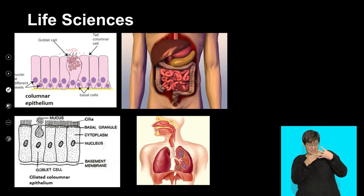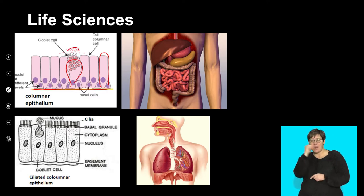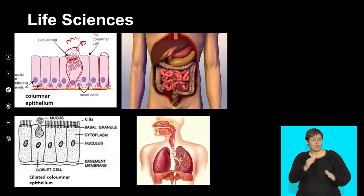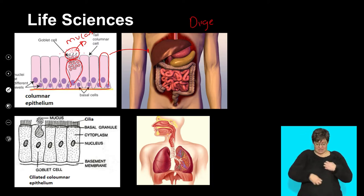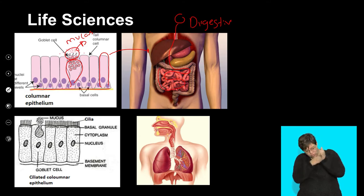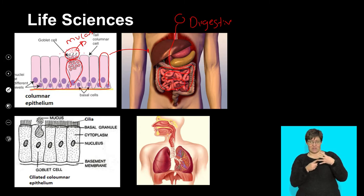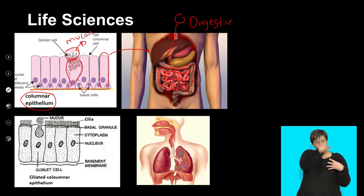Then we looked at two similar structured cells. Remember, epithelial tissue is very often named after what it looks like. Columnar epithelium — because they're column-shaped. These cells have very special goblet cells that produce mucus. Looking at the digestive system, once I start swallowing food it needs to travel through the whole system, and the mucus cells make that transport much easier. Columnar epithelium cells are longer than they are wide.